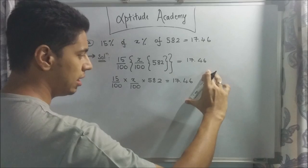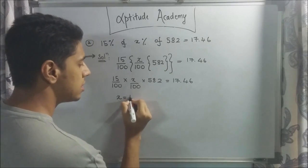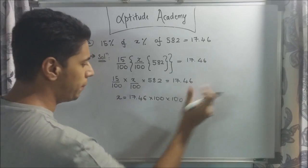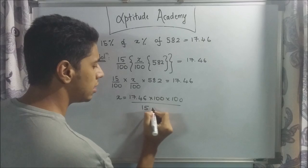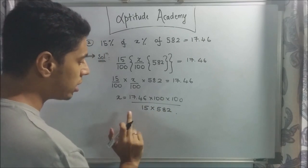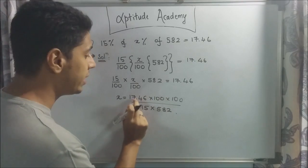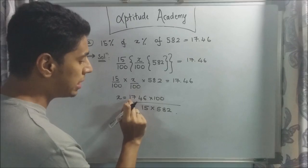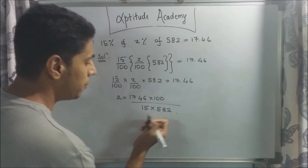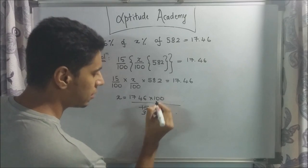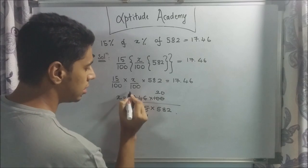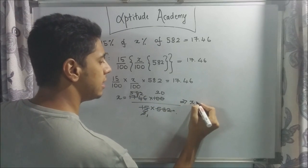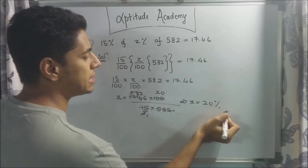We take everything to the right side and keep x on the left. So x = 17.46 × 100 × 100 ÷ (15 × 582). Moving the decimal point two places, 17.46 × 100 = 1746. Dividing 1746 by 15 gives 116.4, and 116.4 divided by 5.82 — simplifying, x equals 20. So x is equal to 20, or 20%. That is your answer.